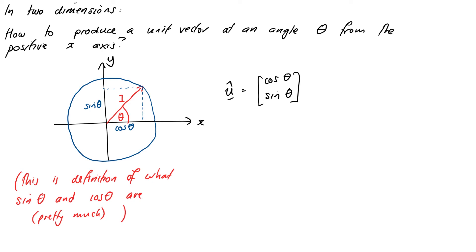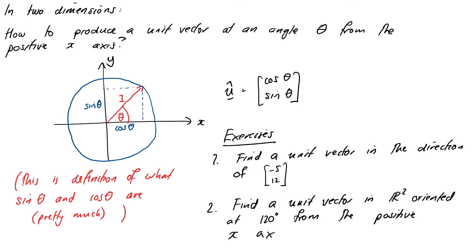Right, so a couple of exercises before we move on. Pause the video and do the following two problems before you go any further. First I'd like you to find a unit vector in the same direction as the vector (-5, 12). And second, I'd like you to find a unit vector in R², oriented at 120 degrees from the positive x-axis.